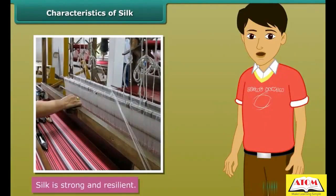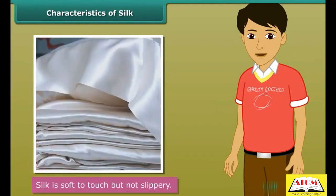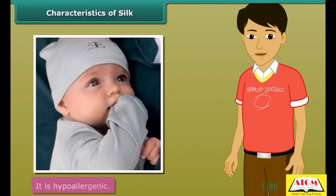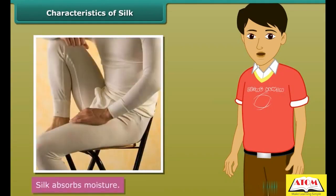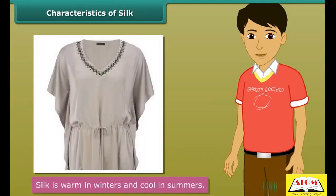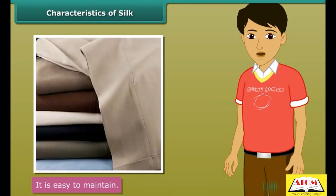Silk is a strong and resilient fiber. It is soft to touch but at the same time not slippery. It has sheen and luster. It is hypoallergenic, meaning it causes fewer allergies in human beings. Silk absorbs moisture, is warm in winters, cool in summers, and is easy to maintain.